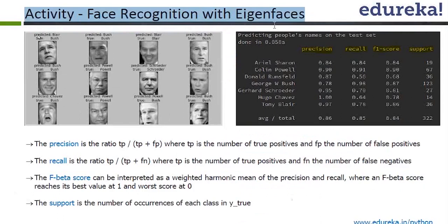I want to give you a few more details on precision, recall, F-beta score, and support as to what each of these means while writing a face recognition program. I would suggest you do not attempt this until you are comfortable with some of the basic programs like Random Forest, K-Mean, K-NN, and PCA. After you have done that, this would be one of your advanced projects. Let me explain what precision means.